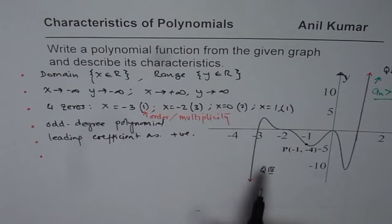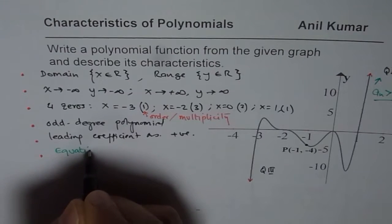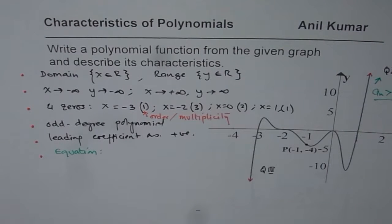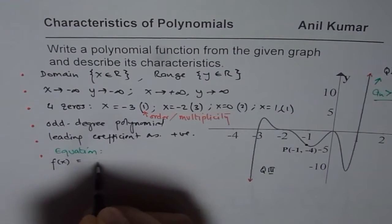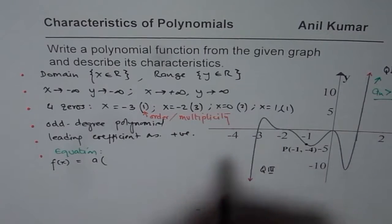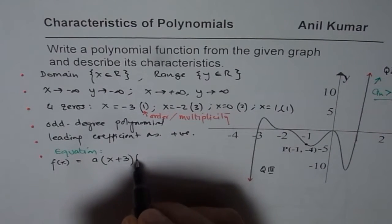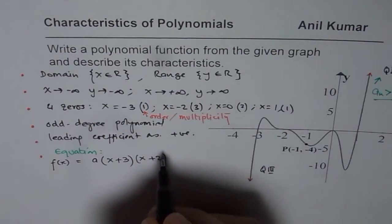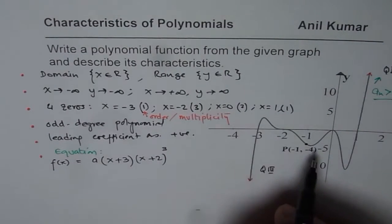Now, let us get back to writing equation. Equation of this polynomial, we can write with the help of these zeros. So, let us say this function f of x is equals to a times. First zero is at minus 3, so it becomes x plus 3. Then, we have at minus 2, so x plus 2. Since it is odd degree and flattened here, let me take 3. It could be 5 also. But for this example, let us take the minimum order.